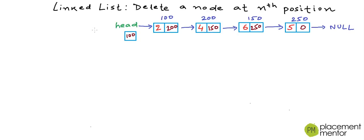I have drawn a linked list here. We have four nodes in this list at addresses 100, 200, 150 and 250 respectively. This is my example of a linked list of integers. We number the positions on a one-based index, so this is the first node, the second node, the third node, and the fourth node.